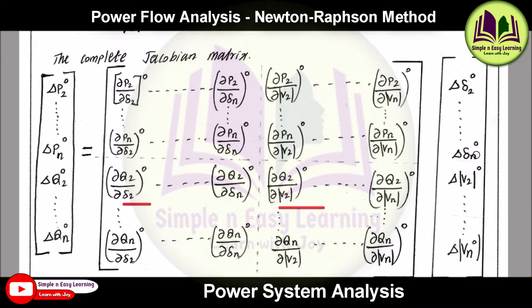And this component ∂P2/∂δ2 and ∂P2/∂V2 and ∂Q2/∂δ2 and ∂Q2/∂V2, this can be solved using the following equations. We will discuss those equations now, and this is how you need to represent the Jacobian matrix in a simplified form.